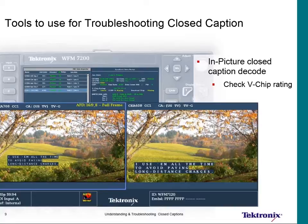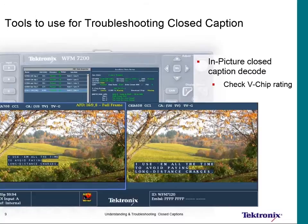One thing to note about the conditional access or US TV ratings: that data is carried in the 608 payload only, as part of the XDS data. There are no provisions within 708 to carry that data. Within 708, it is expected to extract that data out of either PSIP for an ATSC broadcast, or via guide data sent down for cable or satellite services. Only 608 has the actual embedded data within the caption stream.